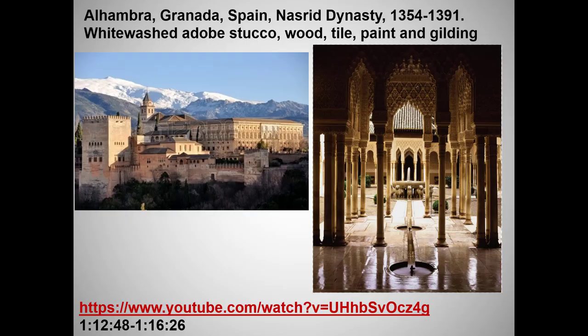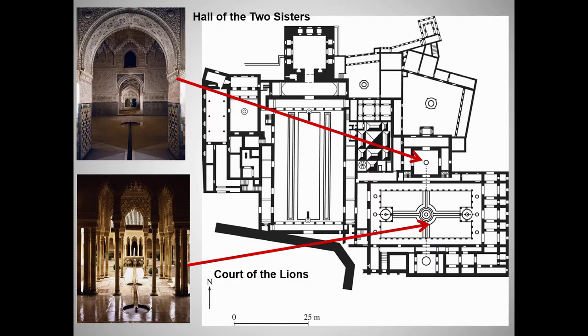We've already examined the mosque of Cordoba. Now let's watch a video clip that talks about the Islamic culture of Muslim Spain and then takes you on a tour of the Alhambra — to my mind the most beautiful building I've ever visited. Of course, I've never been to India or seen the Taj Mahal. All of these are required College Board images.